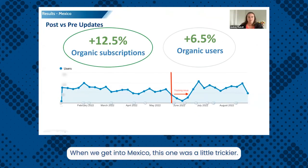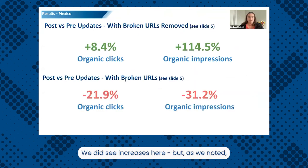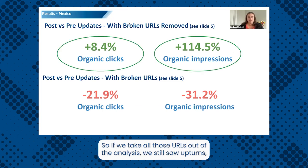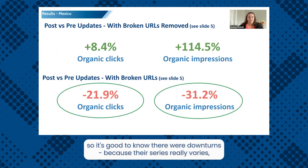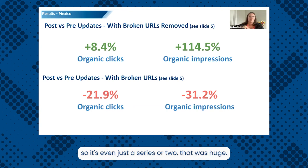Mexico was a little trickier. We did see increases there, but as noted, the broken URLs were probably the biggest issue in the Mexico market. If we take all those broken URLs out of the analysis, we still saw upturns. It's important to note the downturns too because their series really varies — even just one or two huge series can really impact things.